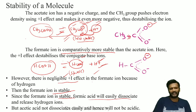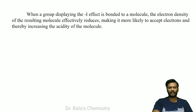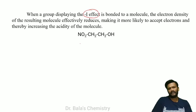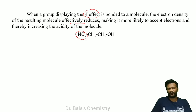The methyl group is an electron donating group (a +I effect group). When a molecule has a minus I effect group, the electron density on the negative charge is effectively reduced, which stabilizes it.